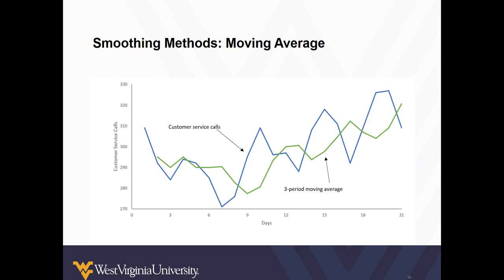This chart illustrates the actual number of customer service calls day by day in blue and then the three period moving average in green. Note how the green line does not reach the same extremes as the blue line - it has a smoothing effect. Though there's still a fair bit of movement going on, we see that our green line is a little bit smoother. That's why we call these smoothing methods.